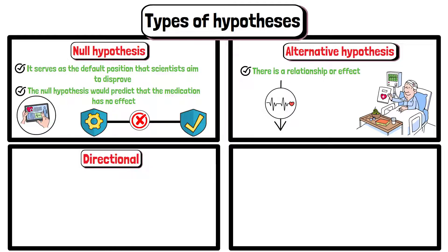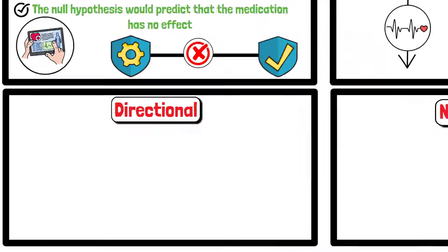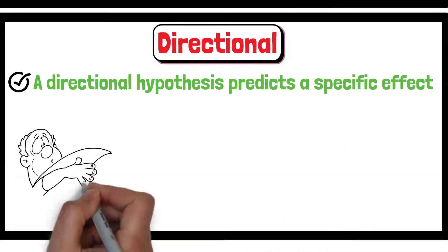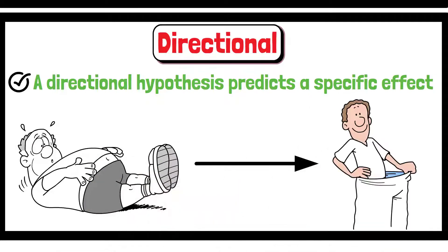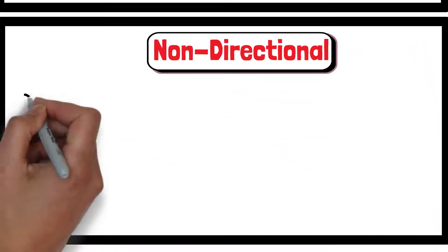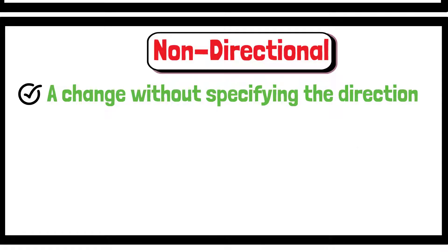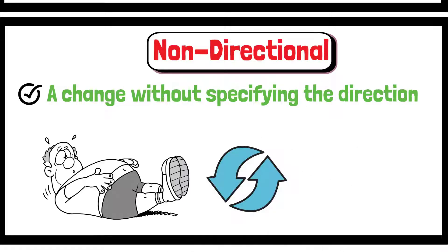In addition, hypotheses can be either directional or non-directional. A directional hypothesis predicts a specific effect, such as increased exercise leads to weight loss, while a non-directional hypothesis simply predicts a change without specifying the direction, such as there is a relationship between exercise and weight.